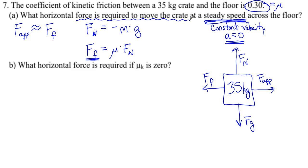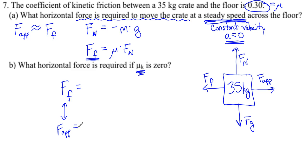Part B: what horizontal force is required if the coefficient of kinetic friction is 0? In other words, if the coefficient of kinetic friction is 0, what is the horizontal force required to keep it in motion? This is more of a theoretical question. Once that coefficient of friction goes to 0, the applied force and the force of friction are going to be the same. So we take our coefficient of friction, which is 0, times the normal force — you already found the normal force in the first part — so multiply it by 0, and that gives you your force of friction, which is the same as your applied force.